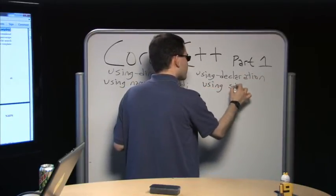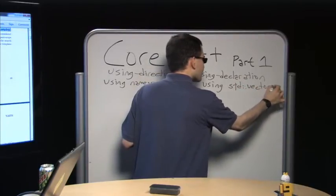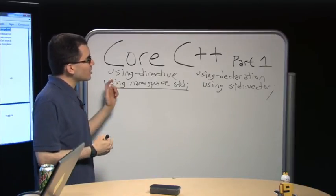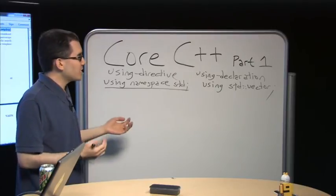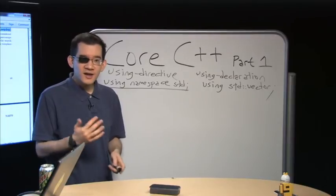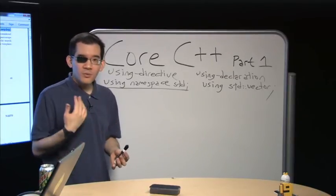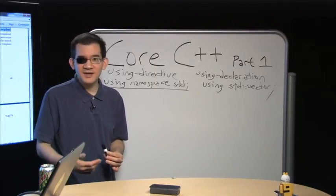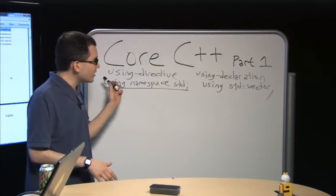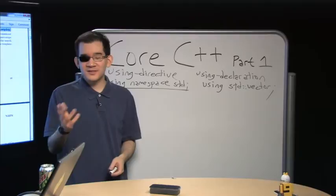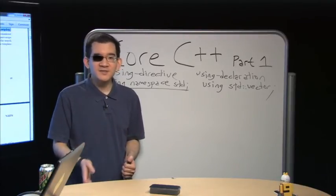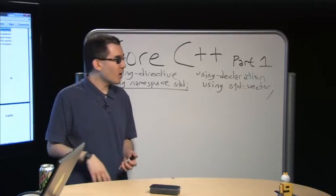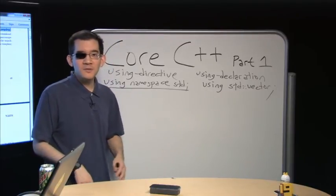There are actually two ways to do using. There is using directives — this looks like using namespace std — and then there's using declarations — this looks like using std::vector. Using directives are the ones most people see on day one in their hello world programs, dragging everything in. A using directive says I want to take all the names in std and drag them out. The unqualified name lookup rule first searches everything that really exists in the global namespace, then if there are any using directives, it goes and searches those namespaces too. That search is transitive.